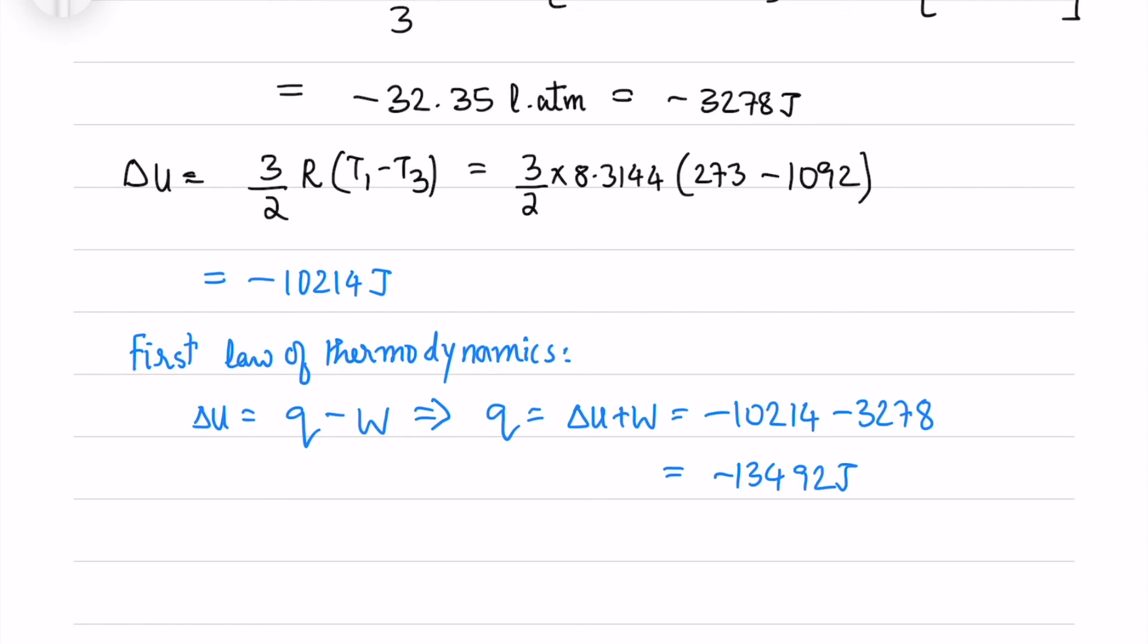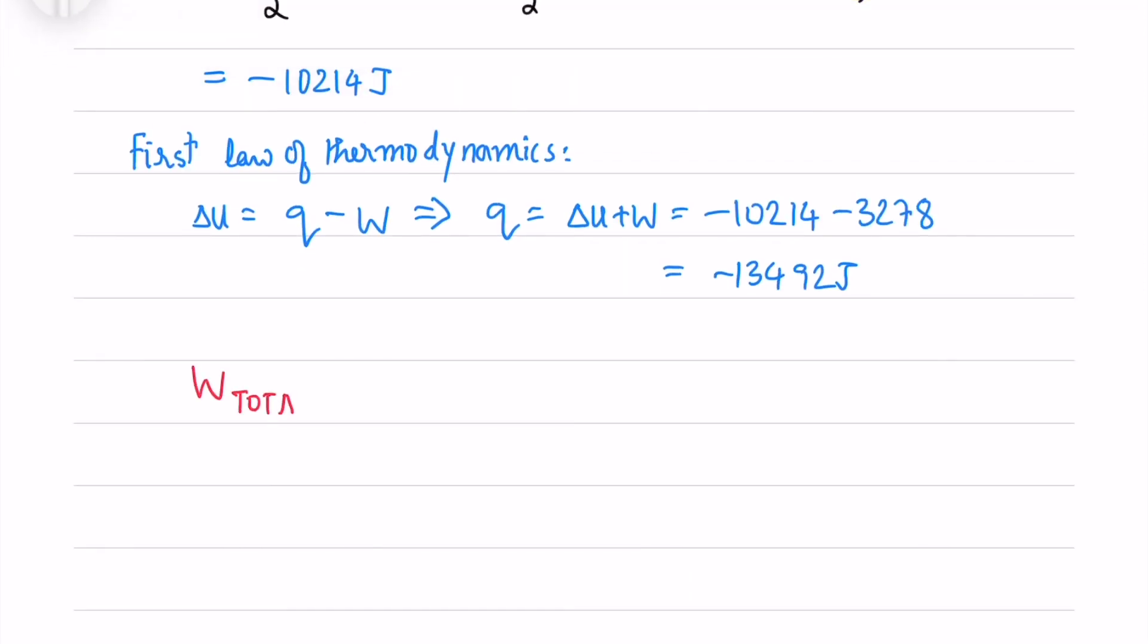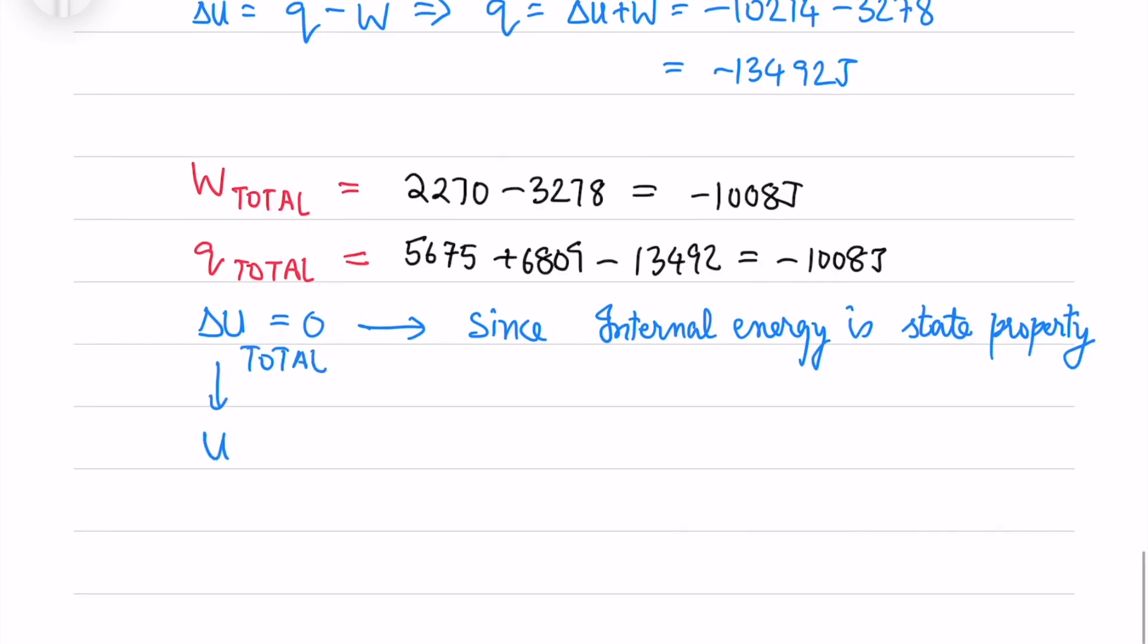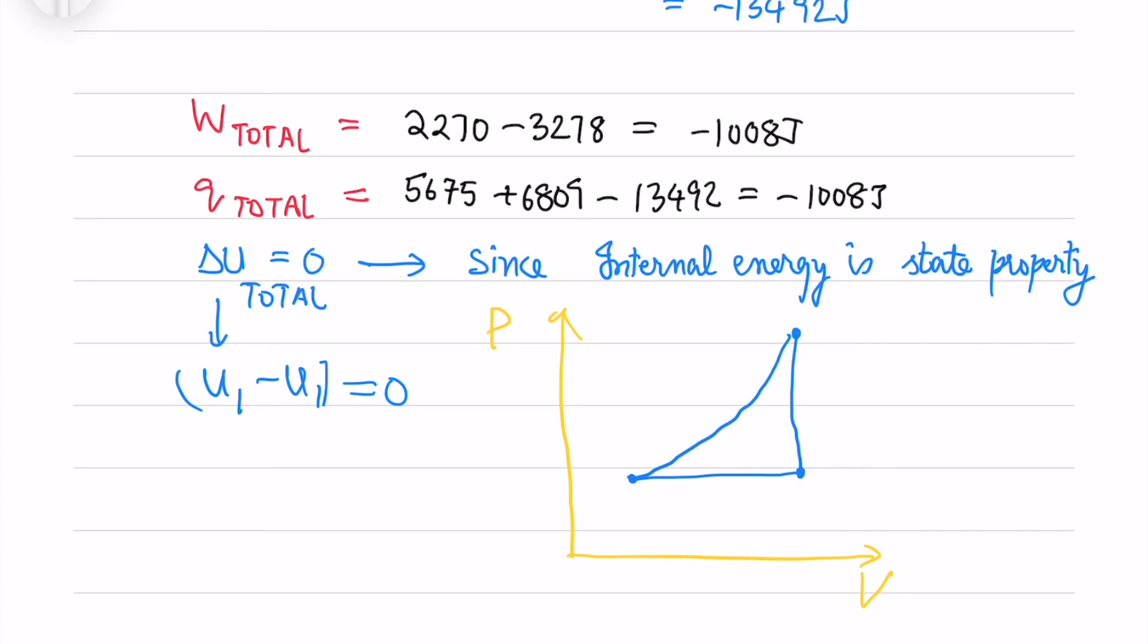So the Q is obtained. Now we get the total work done by adding all the 3 work done. In a similar fashion the total heat transferred is negative 1008 joules. And the delta U is 0. Since internal energy is a state property, means when you go from initial state to the initial state you get the change as 0. So you can look at in the P versus V diagram. So you have 1, 2, 3 states. So you go from first state to the last state. So the delta U is 0.